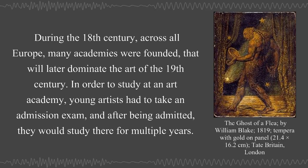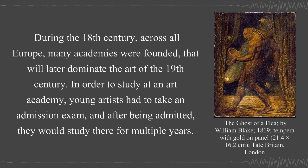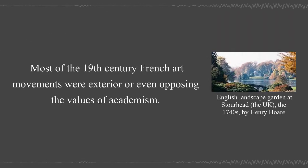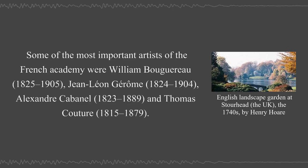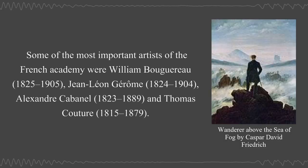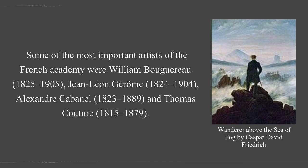In order to study at an art academy, young artists had to take an admission exam and after being admitted they would study there for multiple years. Most of the 19th century French art movements were exterior or even opposing the values of Academism. Some of the most important artists of the French Academy were William Bouguereau, 1825–1905, Jean-Léon Gérôme, 1824–1904, and Alexandre Cabanel.